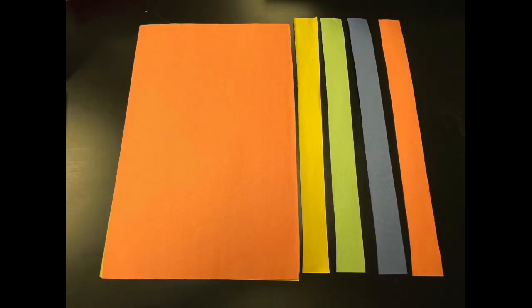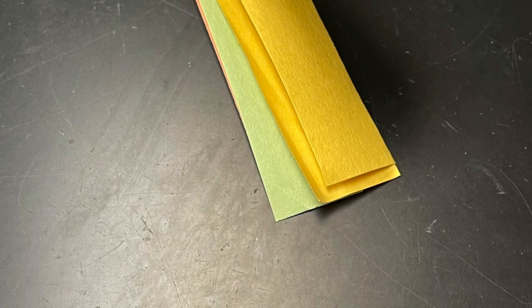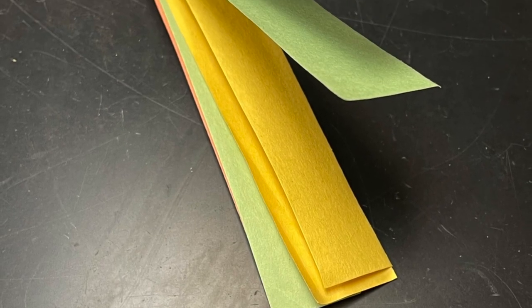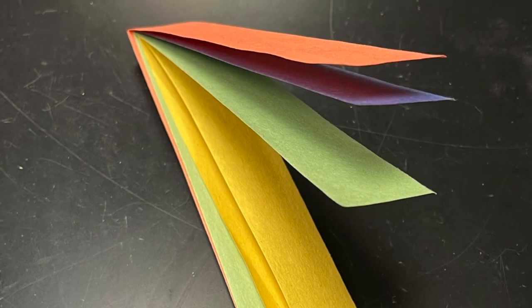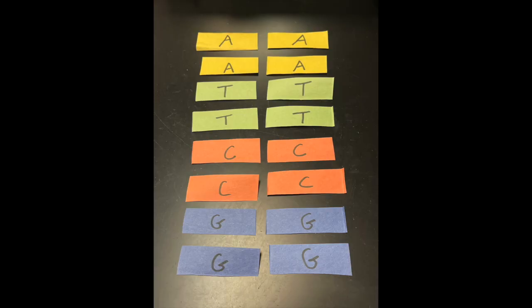Then when you have those four different strips, you're going to stack them on top of each other and fold them in half. Then fold them in half yet another time, and you're going to cut at your fold. Then simply label each color one particular letter representing one particular nitrogenous base.